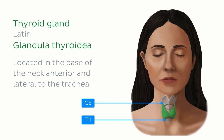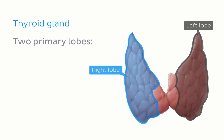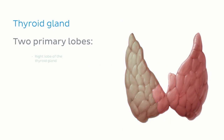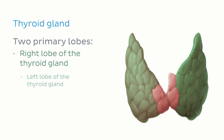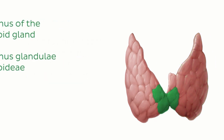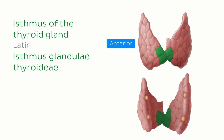The thyroid gland is generally butterfly or H-shaped in appearance and is composed of two primary lobes, each with a defined superior and inferior pole. These two main lobes are known as the right lobe and the left lobe of the thyroid gland, and are roughly similar in size and shape. Connecting the two lobes is a region called the isthmus, which we can see from both an anterior and posterior view.